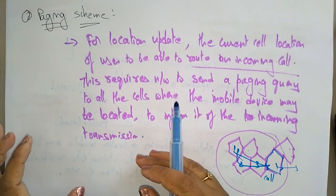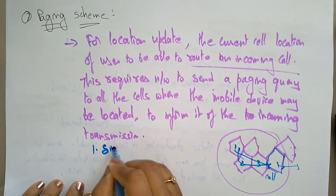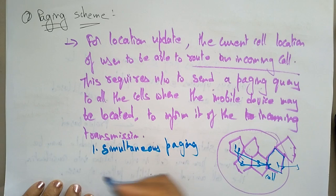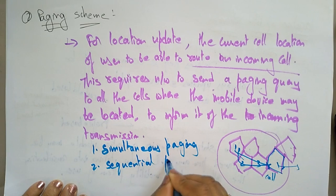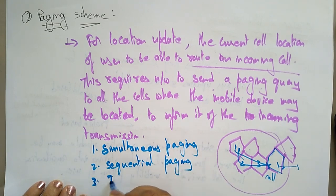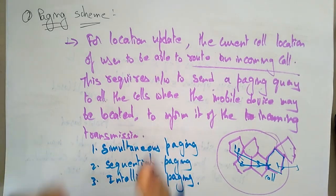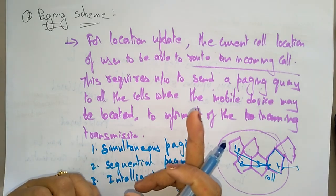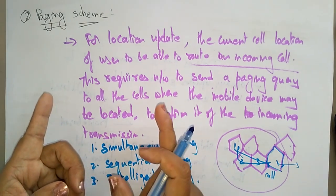The paging schema handles incoming transmission and can be done using any of three strategies: simultaneous paging, sequential paging, or intelligent paging. To summarize, location management keeps track of active mobile stations. It has two basic operations: location update schemas and paging schemas. Location update schemas are divided into static and dynamic location update schemas.